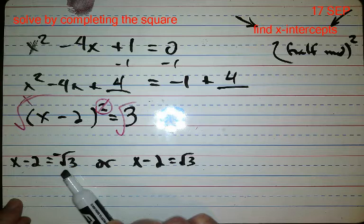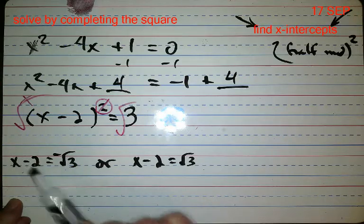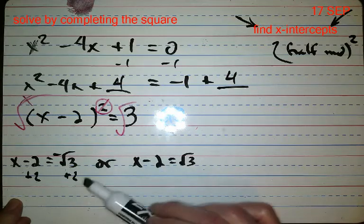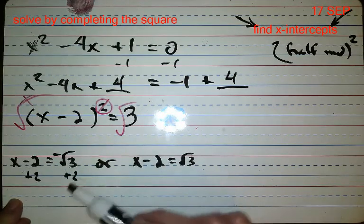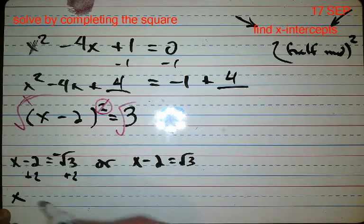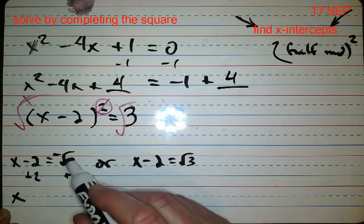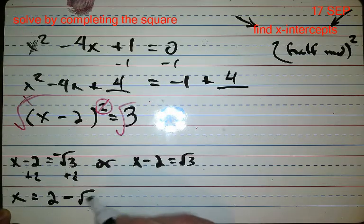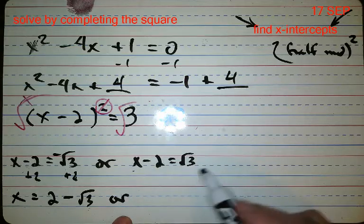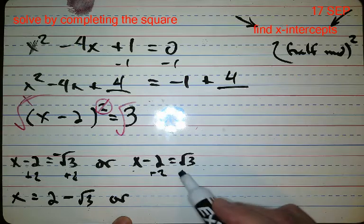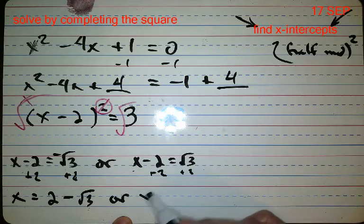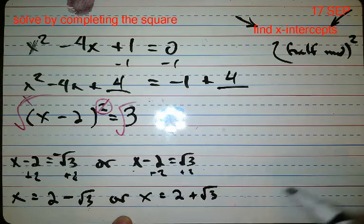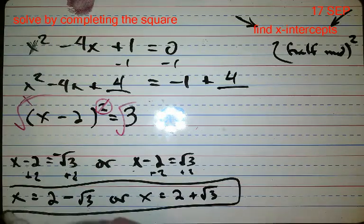Now check out the answer. I have to add two to both sides. Don't be that person that adds this to get five. That's not right—you cannot add a whole number and a radical. So it has to look like this: two minus square root of three, or over here, whenever I add the two, I get two plus the square root of three. That's what we're looking for.